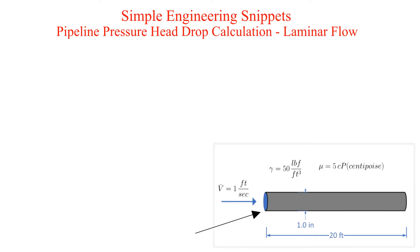We have a 20 foot, 1 inch diameter pipe. Oil is flowing with an average velocity of 1 foot per second. The specific weight of the oil is 50 pounds force per cubic feet. The dynamic viscosity of the oil is 5 centipoise.